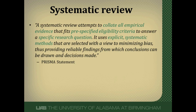A systematic review, on the other hand, attempts to collate all the evidence using very explicit pre-specified eligibility criteria for a study to get into the review. Importantly, it tries to answer a very specific research question, in contrast to a narrative review which gives that broad overview. A systematic review has very explicit methodology used to locate the studies, critique them, and combine them.